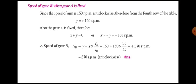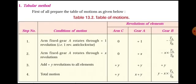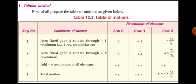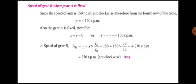Now applying the first condition — speed of gear B when gear A is fixed. The speed of the arm is 150 RPM, so from the table, plus y equals 150 RPM, therefore y equals 150. Since gear A is fixed, x plus y equals zero, and substituting y equals 150, we get x equals minus 150 RPM.